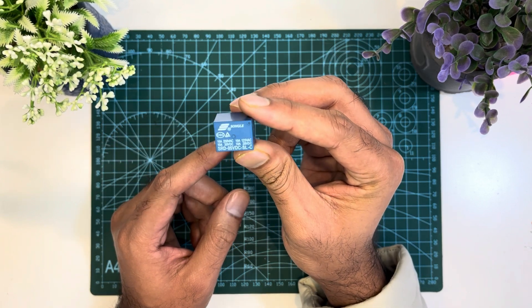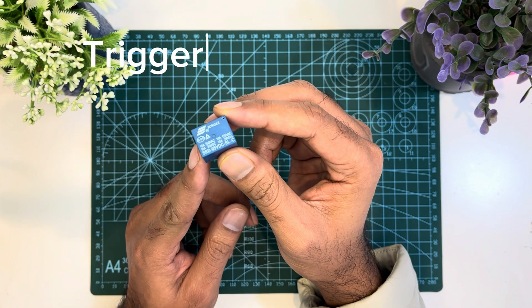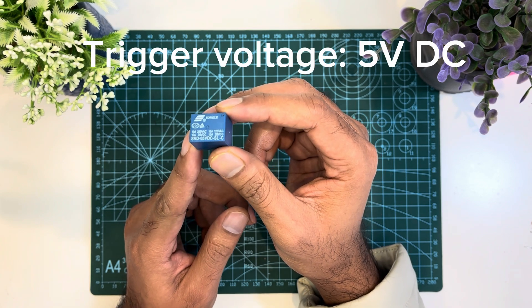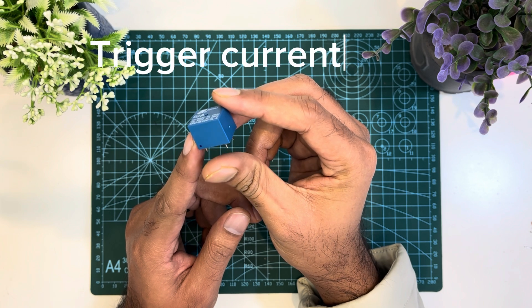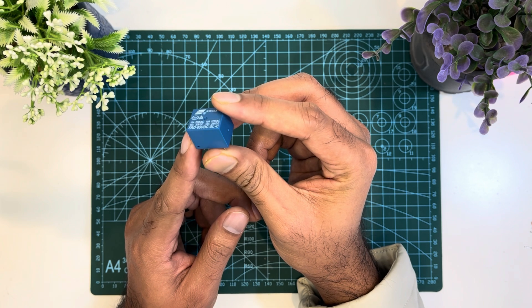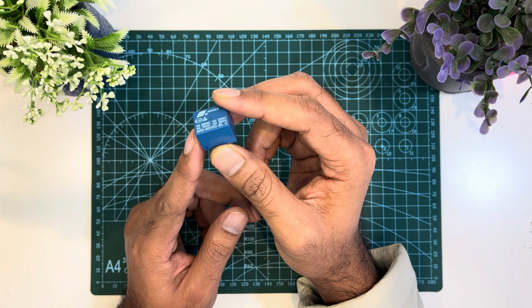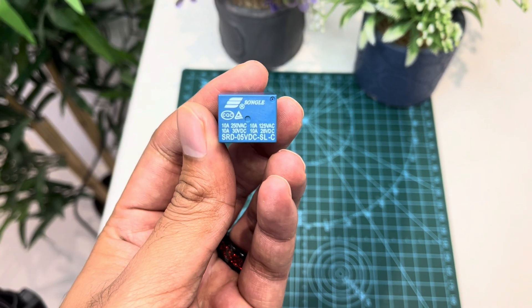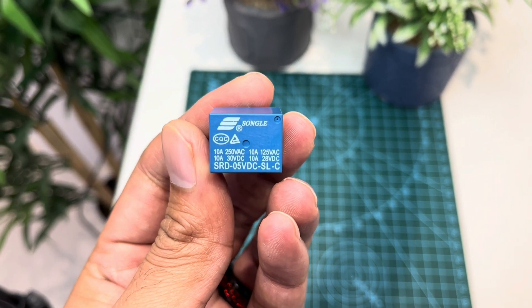This is the 5V relay in my hand. The trigger voltage for this relay is 5V DC and the trigger current is about 70 mA. The maximum AC load current is 10A at 250 or 125V.